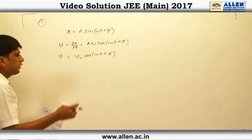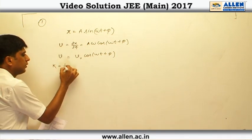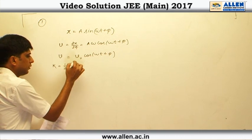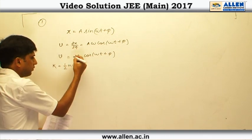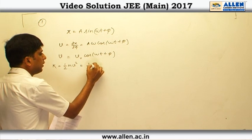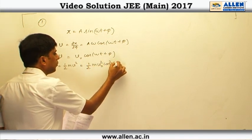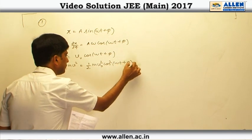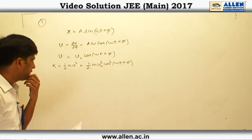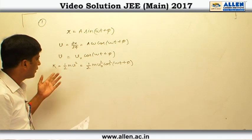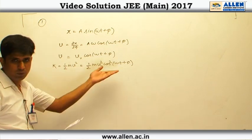Since kinetic energy of a particle is given by half m V square, therefore from the expression of velocity we get half m V naught square cos square omega t plus phi. From this expression we can say the dominating function of the kinetic energy is cos square.